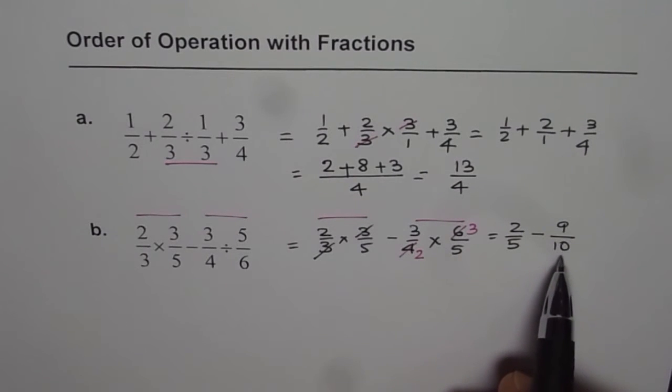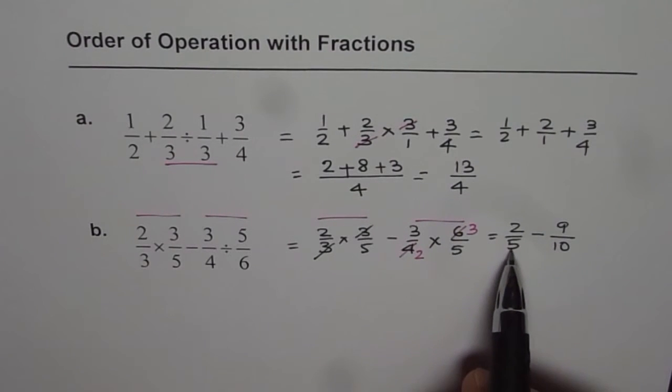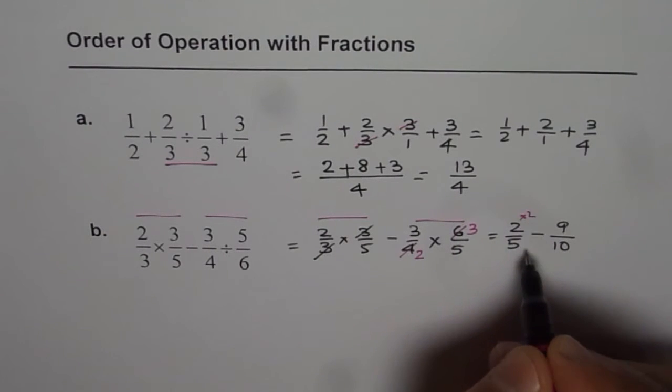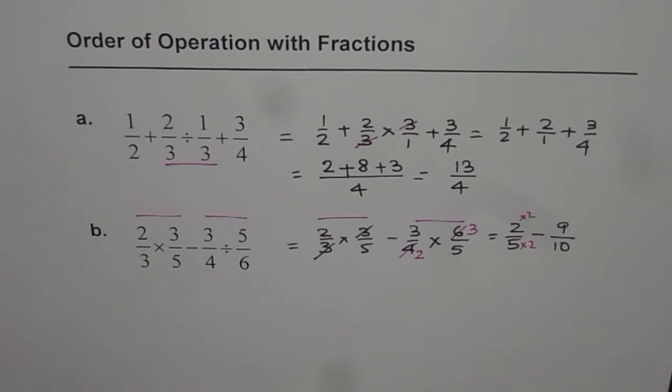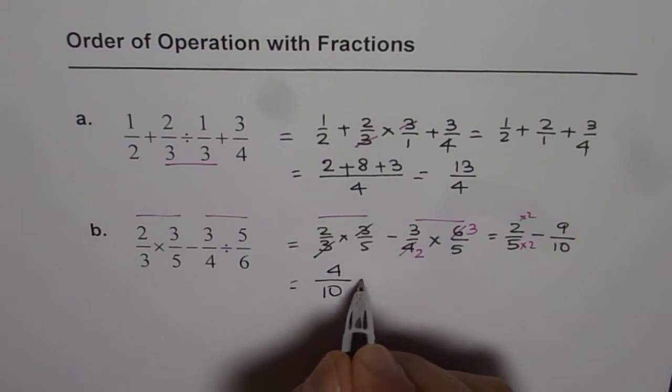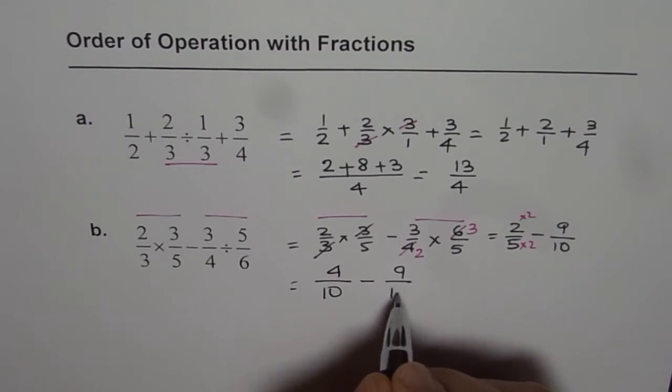Now, to take away nine divided by ten from two over five, we need a common denominator. The common denominator can be ten, which you will get by multiplying the first terms by two. So, you have four over ten take away nine over ten.